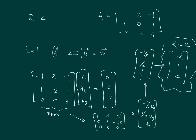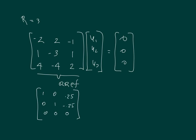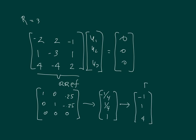For r equals 3, we subtract 3 down the main diagonal and multiply by the column vector U1, U2, U3. Taking RREF of that matrix, we get U1 equals minus one-fourth U3 and U2 equals one-fourth U3. Multiplying everything through by 4 gives the eigenvector minus 1, 1, 4, associated with eigenvalue r equals 3.